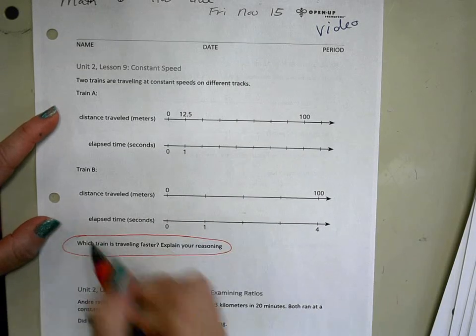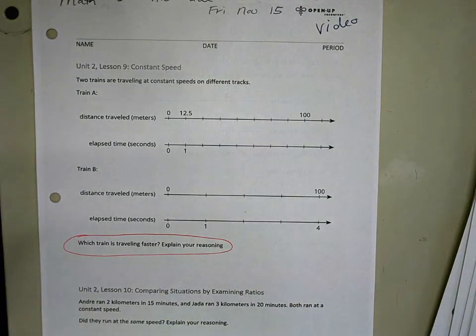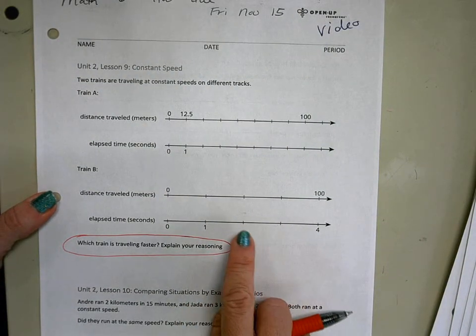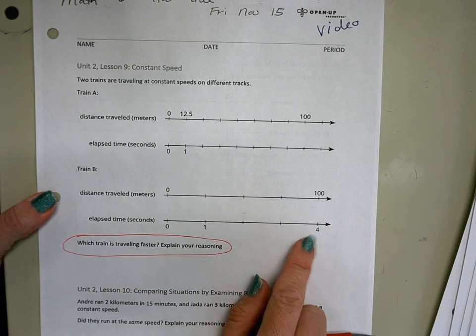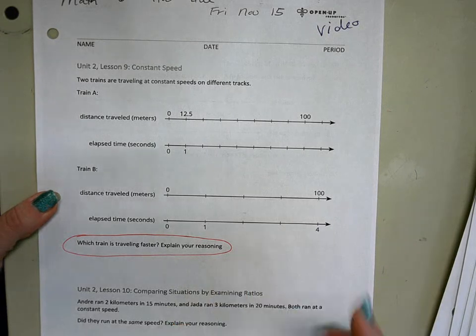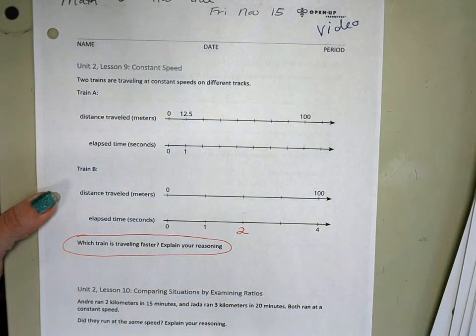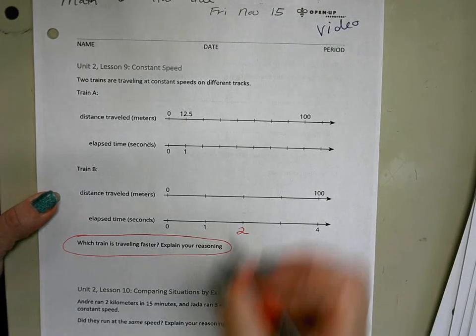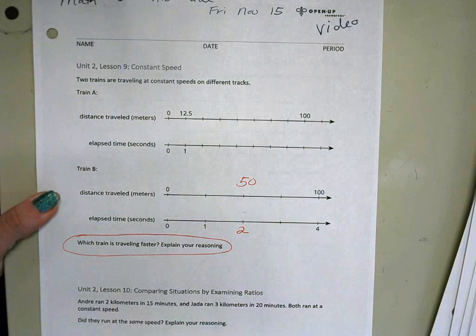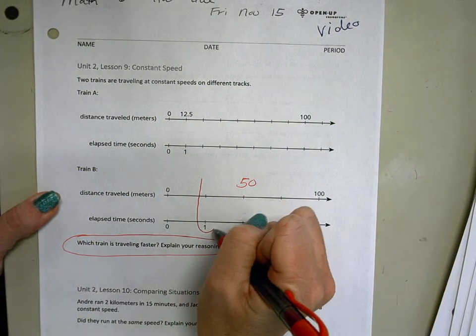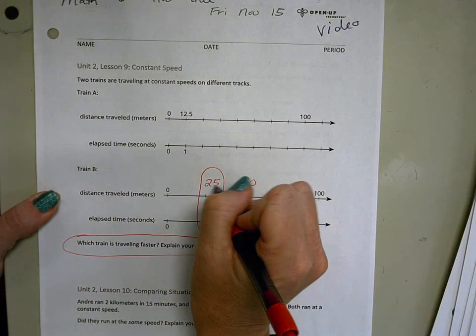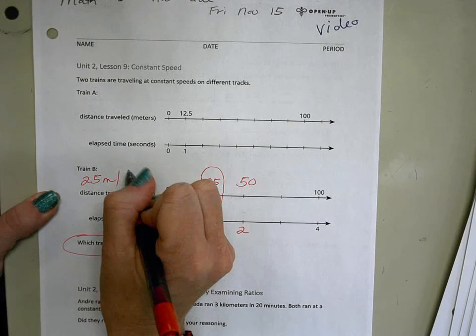So let's look at the information we have. I might want to start here because there's less intervals, and I'm starting with four seconds is 100 meters. So two seconds would be how many meters? Alexis? 50, very good. We're dividing both values by two, which means that one second the train travels how far? Junior? 25, very good. So Train B is traveling 25 meters in one second.